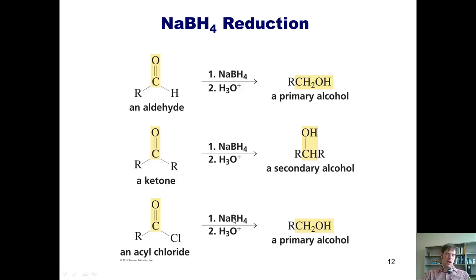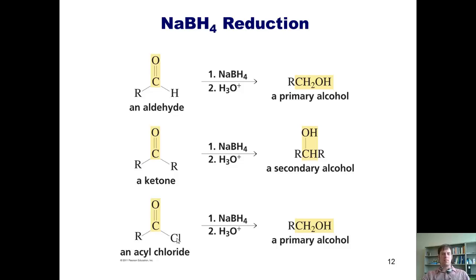If you take sodium borohydride and react it with an acid chloride, the H⁻ goes up to the carbonyl carbon, electrons go up onto the oxygen, then the electrons come down and kick off the chloride. That gives a temporary aldehyde intermediate. Unfortunately, you can't stop there — a second molecule of sodium borohydride comes in, thrusts in a second H⁻, pushing the electrons up onto the oxygen, and then it gets protonated during the quench, reducing the acyl chloride all the way down to a primary alcohol.